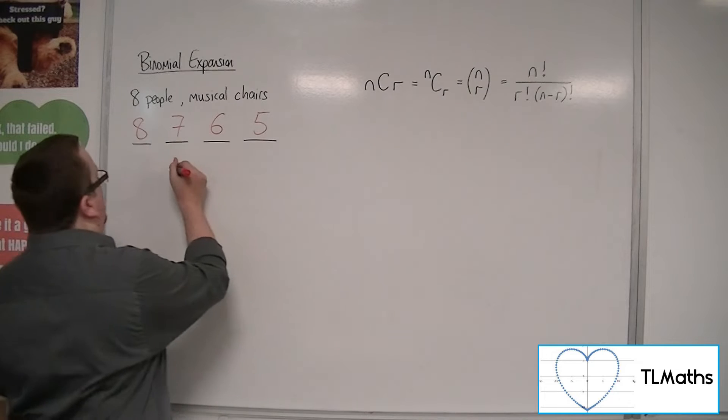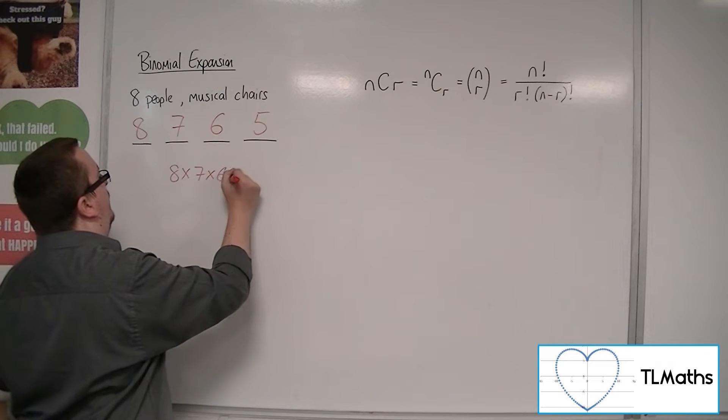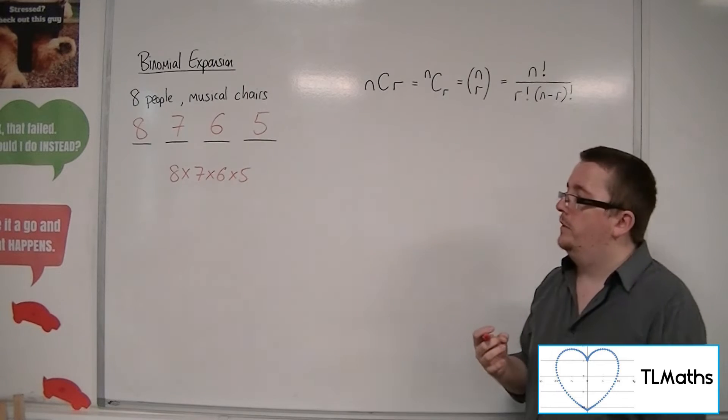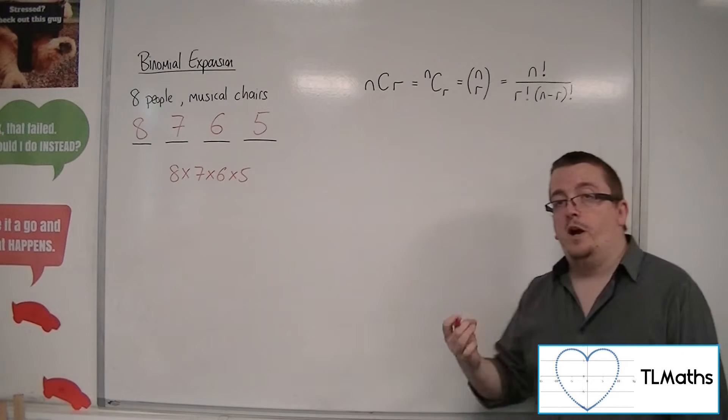and five remaining to sit in the last chair. So effectively, we've got 8×7×6×5 different ways, different arrangements, and what we would call permutations.